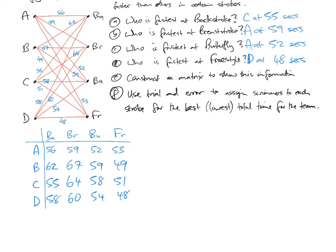Use trial and error to assign the swimmers to each stroke for the best, lowest overall time for the team. So we are going to learn techniques that will do it, will assign the best swimmers for the lowest overall time to minimize, in a foolproof way. But we are just doing it trial and error. We're going to try certain things to see if we can get the lowest time.